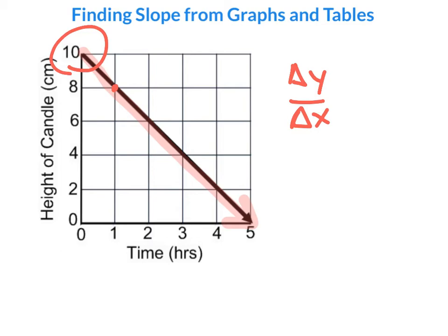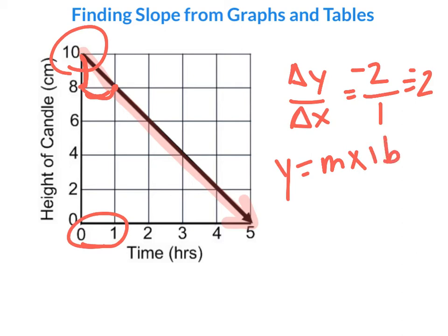I can see that the change in y is going from 10 to 8, so that's a change of two centimeters. And this is a change of one. So my slope is just going to be two, or negative two, two centimeters every one hour are being burned. So this is actually going to be negative. Now we're going to put that in the equation of y equals mx plus b. So y is equal to negative 2x plus our y-intercept of 10.